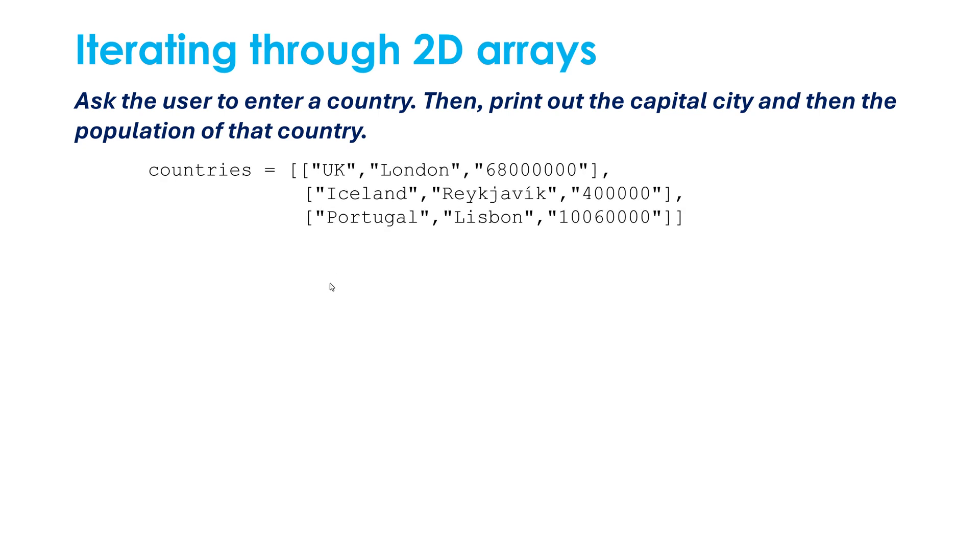I've got a 2D array called countries. I've got the country, I've got the capital, I've got the population of the country as items or elements in these arrays. I want to ask the users to enter a country, then I want to print out the capital city and then the population of that country. So how am I going to solve this problem?